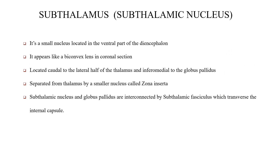The subthalamic nucleus is a small nucleus located in the ventral part of the diencephalon, appearing like a biconvex lens in coronal section. It is located caudal to the lateral half of the thalamus and inferomedial to the globus pallidus, separated from the thalamus by a small nucleus called the zona incerta. The subthalamic nucleus and the globus pallidus are interconnected by the subthalamic fasciculus, which traverses the internal capsule.